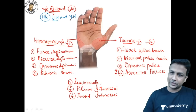Quick revision: 20 muscles in the hand — point 1. All supplied by ulnar and median nerves — point 2. 15 muscles by ulnar nerve, 5 muscles by median nerve. Lumbricals attach to FDP tendons. Palmar and dorsal interossei are between bones. Now welcome to the nerve injuries.